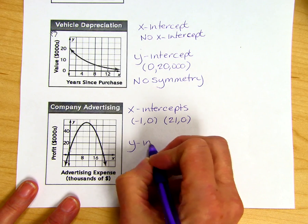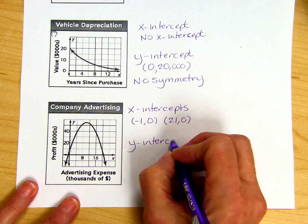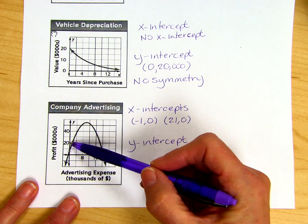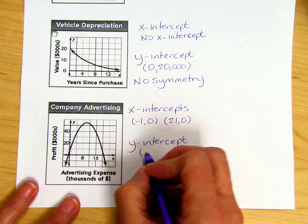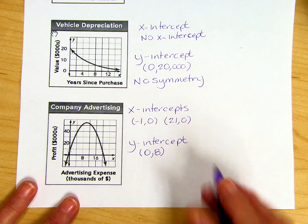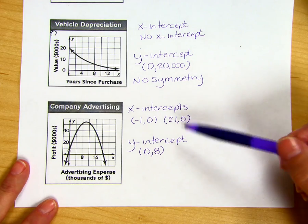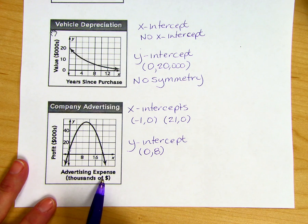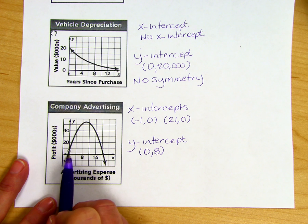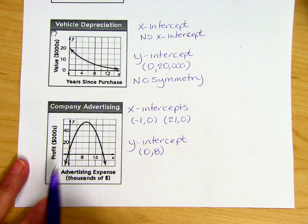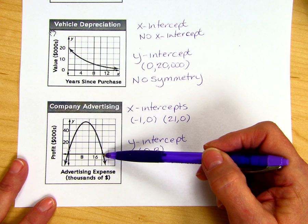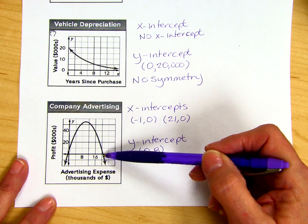And then we have our y-intercept because it only intersects the y-axis one time, and that's right here. It looks like we're counting by 10s, so this is just under 10, maybe at 8. So when x is 0, y would be approximately 8. So when we have advertising expense in thousands of dollars, so it's $1,000, with no spending we have a profit of $8. And advertising expense as it goes over and gets at $21,000 spent, we haven't got any profit again.